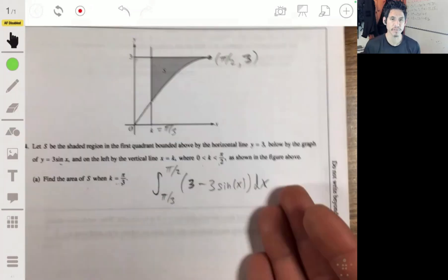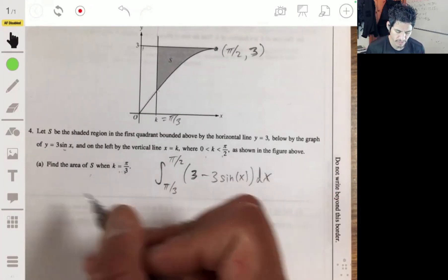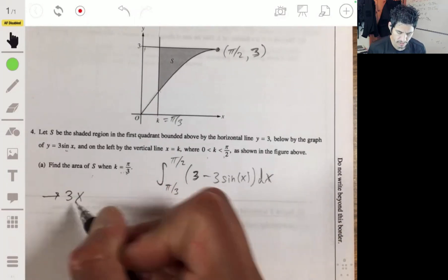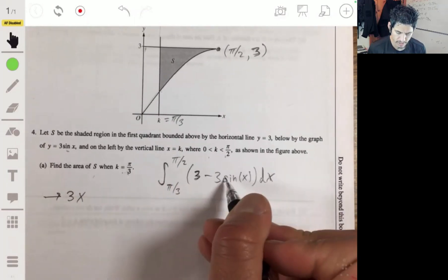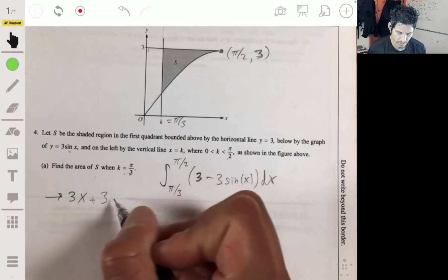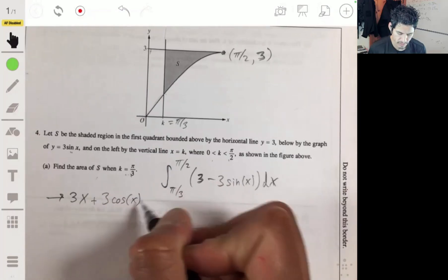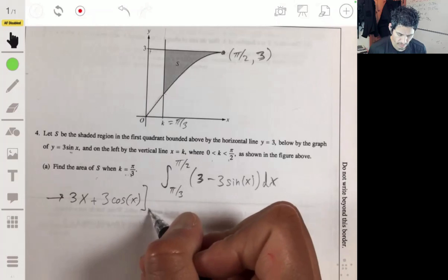So not a pretty simple integral to find the derivative of. So 3x plus, because that's going to be a positive, 3 cosine of x, from pi over 3 to pi over 2.